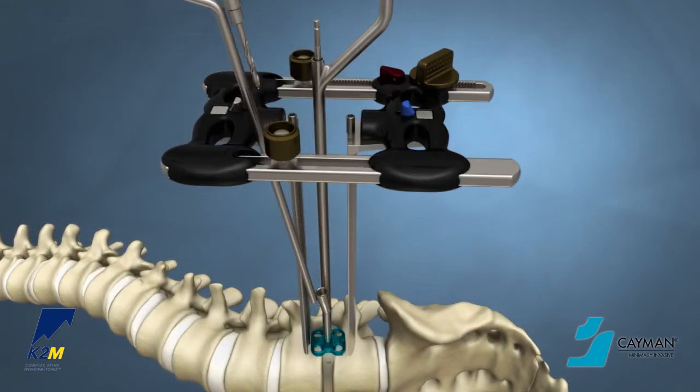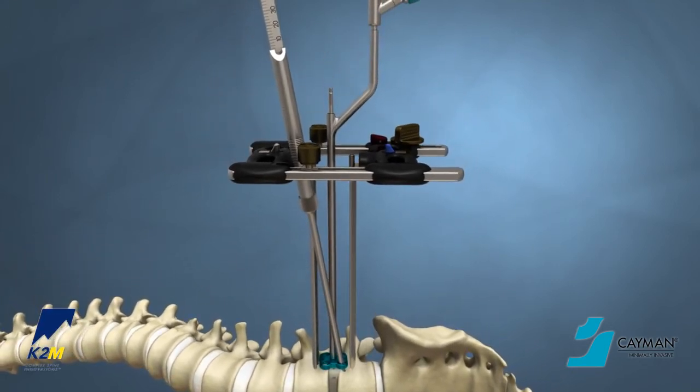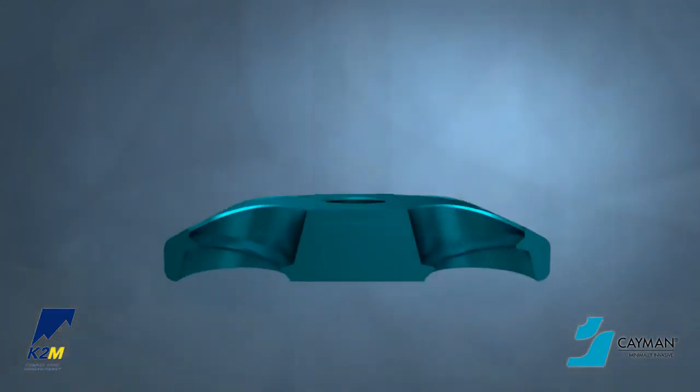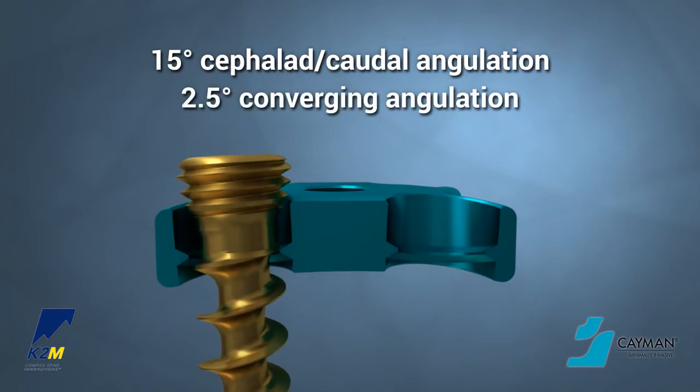Screw size may be determined by placing the 100 mm depth gauge into the pilot hole. The Cayman MI screws are self-tapping. However, a 5 mm tap may be used through the drill guide. The Cayman MI plate screw holes are biased 15 degrees to normal and up to 2.5 degrees converging.